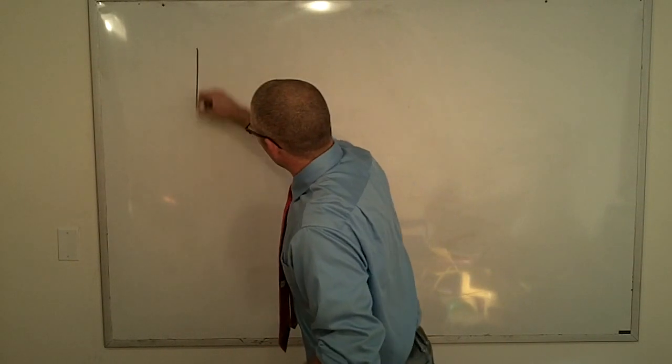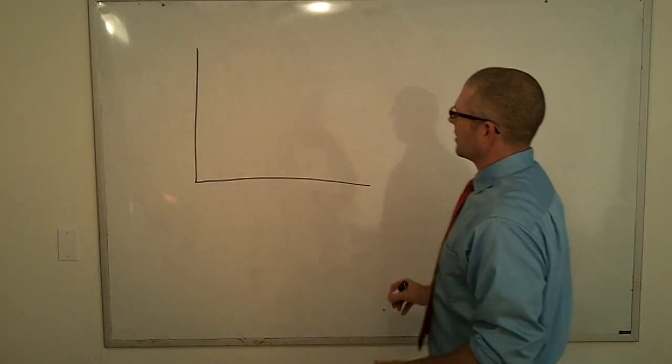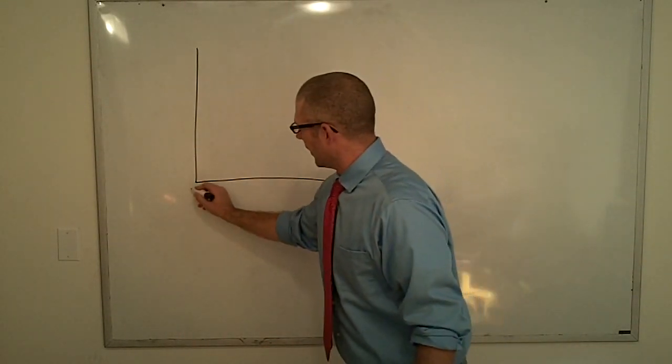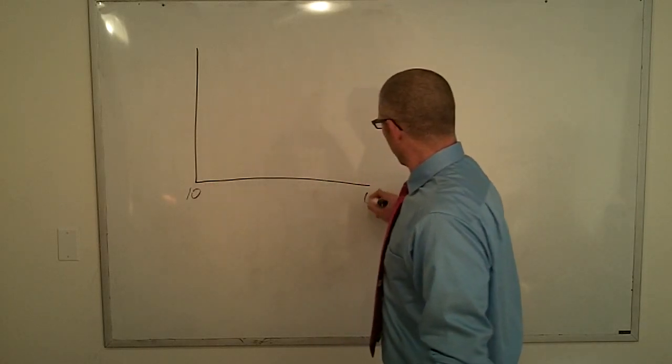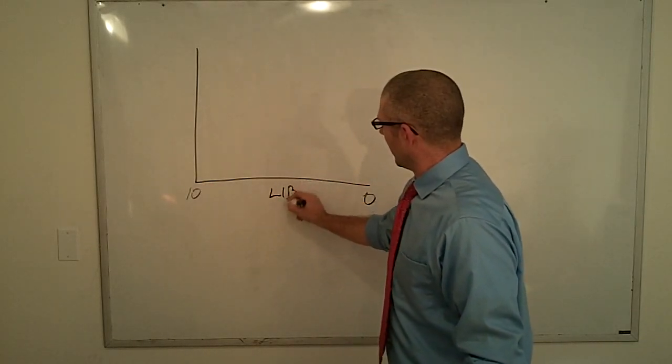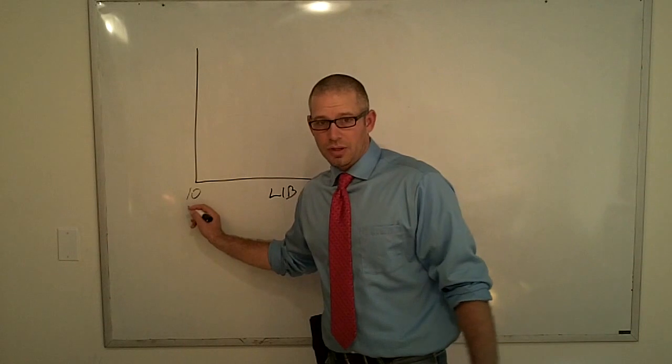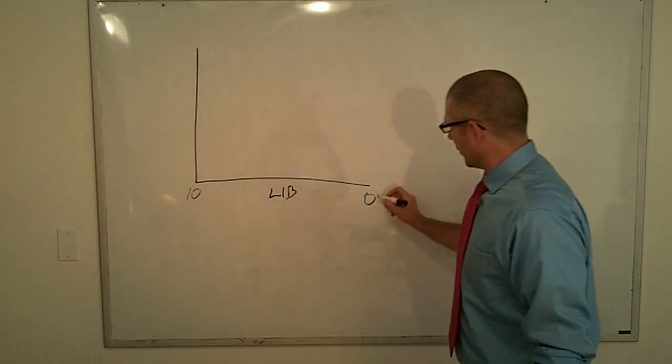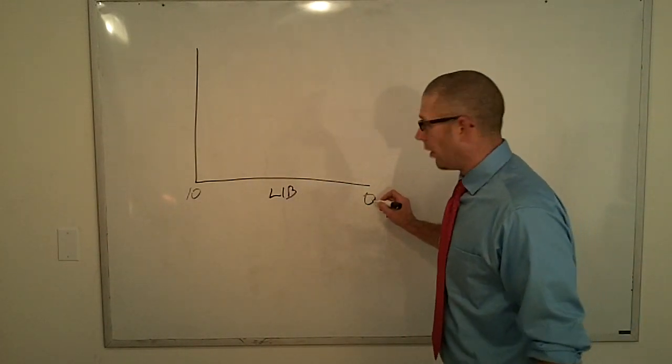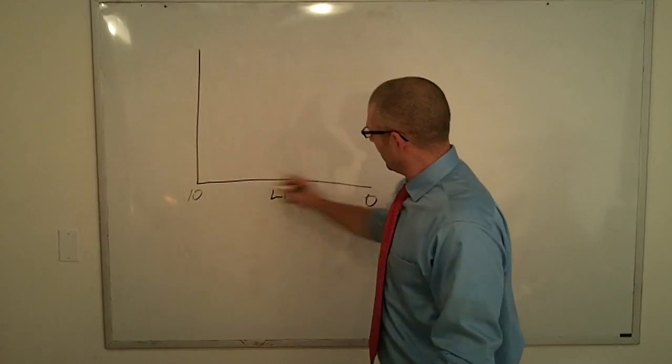Alright, so here is our simple axis. We have our 10 to 0 liberal. 10 being as liberal as you possibly can be, to 0 being not liberal at all. So this is our liberal axis.